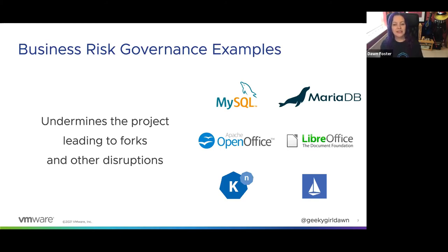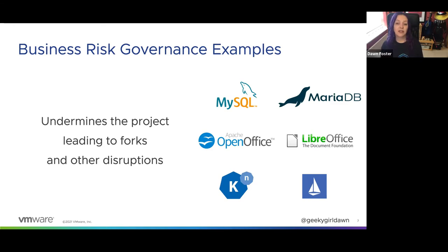MySQL was forked into what became MariaDB when Oracle acquired Sun. Many of the original MySQL core developers, including the creator Monty, didn't think Oracle would be a good owner and wanted to ensure the codebase would remain open. Shortly after the same acquisition, LibreOffice was forked from OpenOffice. Less than a year later, the developers being paid to work on OpenOffice were laid off and OpenOffice was donated to the Apache Software Foundation. Both forks caused a significant brain drain from the original projects, and in the case of LibreOffice, the fork became more popular than the original.